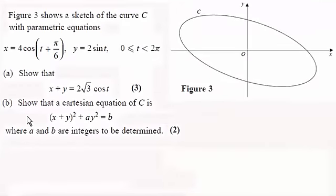Hi there. Now for part B of this question, we've got to show that the Cartesian equation for this curve C is given by (x + y)² + ay² = b, where a and b are integers to be determined.